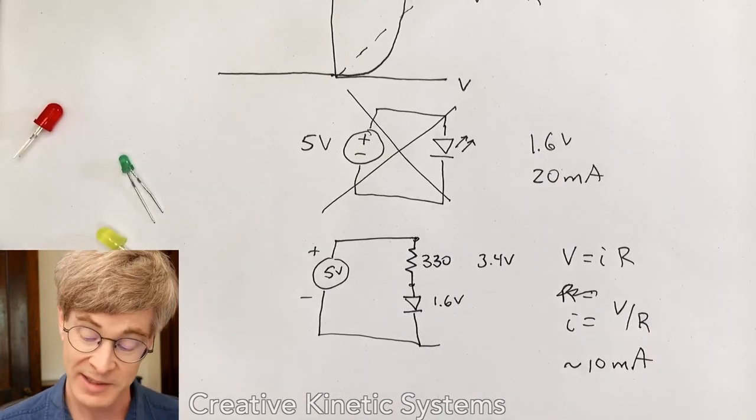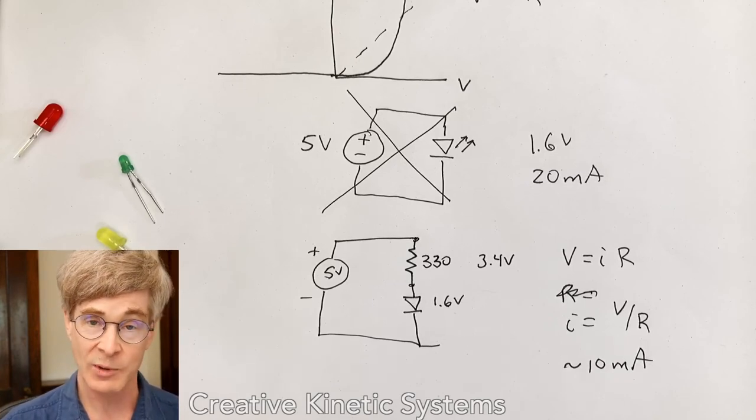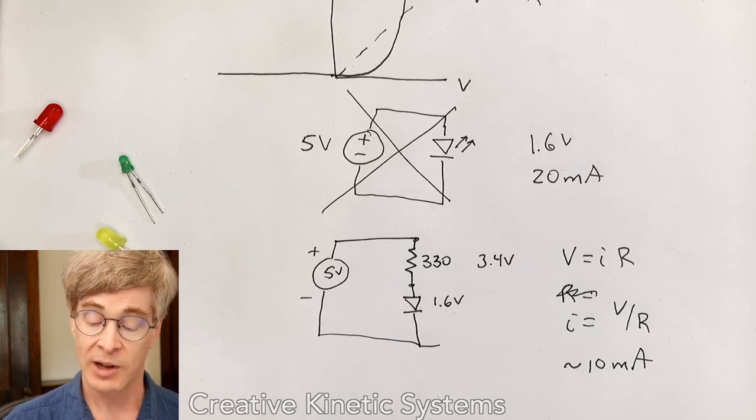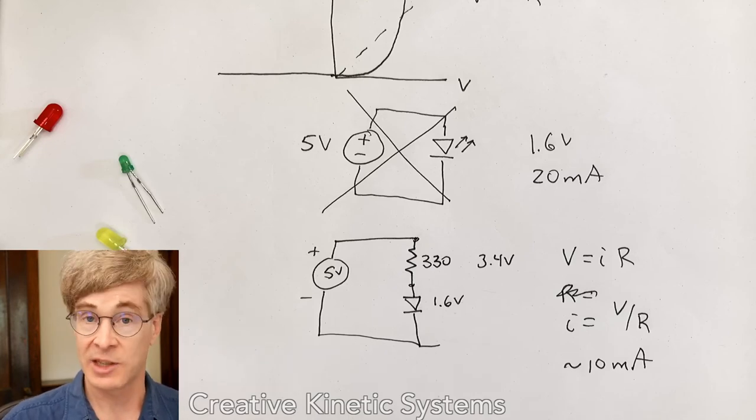which will glow with medium brightness and be well within the kind of safe operating range. Oops, there you go. Now you can see it. So here's a case where by adding a resistor, we effectively add a very simple voltage regulator, which allows the LED to reach an equilibrium within its operating characteristics and limits the total current.